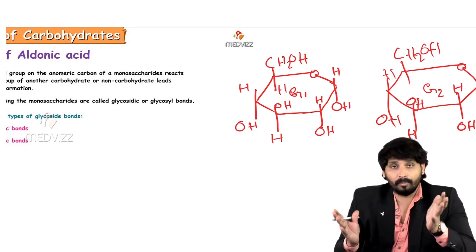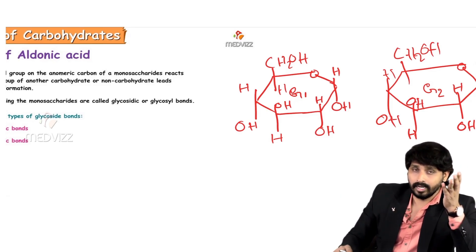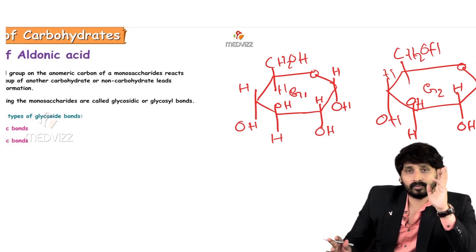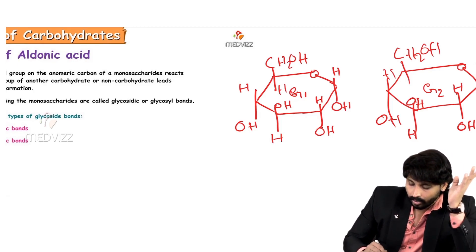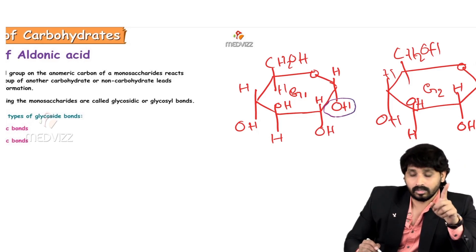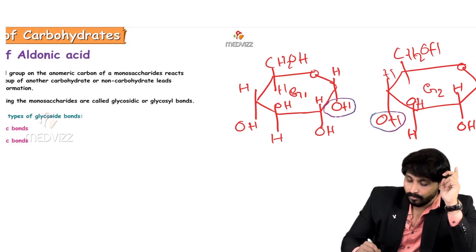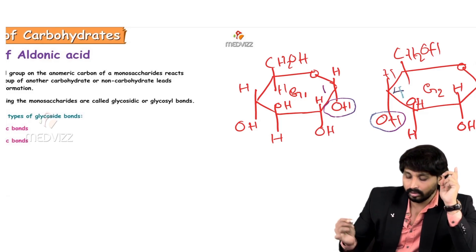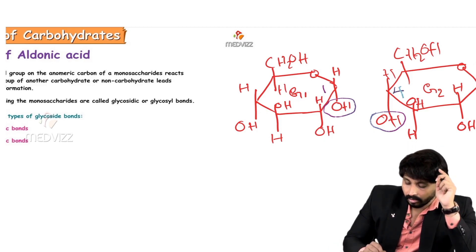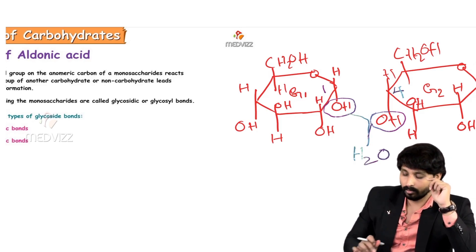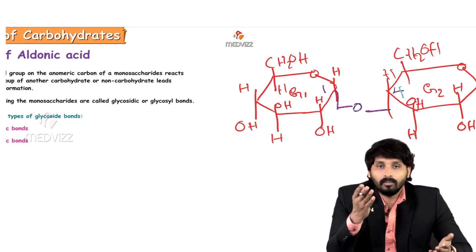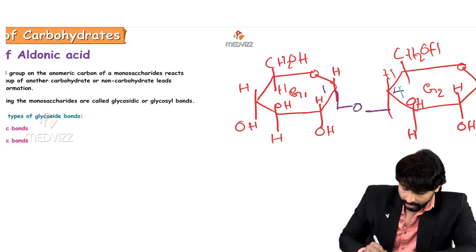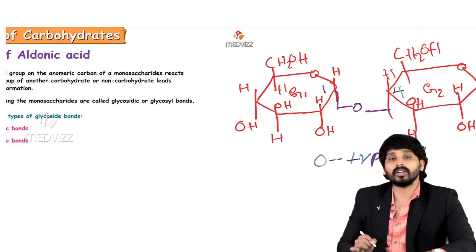This shows how a glycosidic linkage is formed. Taking the example of maltose, a disaccharide — maltose is made up of two monosaccharides, both glucose. The hydroxyl group present at the first carbon of the first glucose and the hydroxyl group present at the fourth carbon of the second glucose react together. Two OH groups combine, a water molecule is removed, and a glycosidic linkage is formed. This type of glycosidic linkage is known as an O-type glycosidic bond.